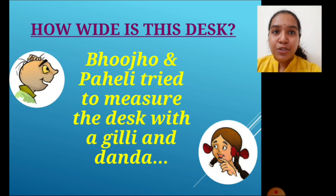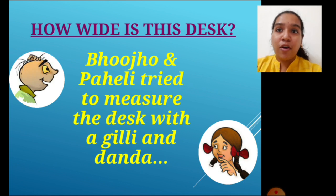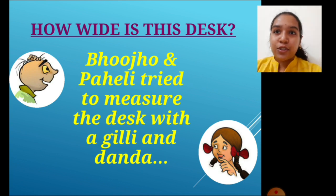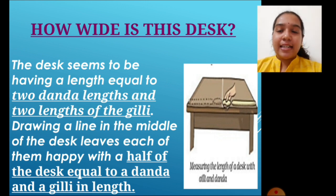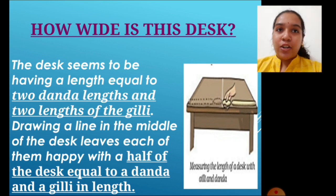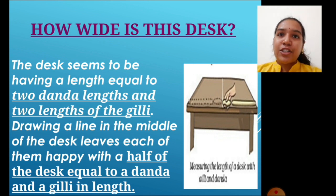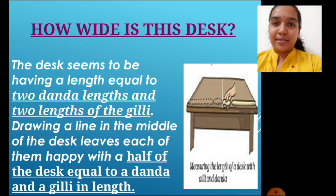Bhujo and Paheli tried to measure the desk with the help of Ghilli and Danda. Ghilli Danda is a game played in olden days - the Danda is like a wicket and the Ghilli resembles the bales in cricket. They used this Ghilli and Danda to measure the desk. After measuring, they found the desk length to be equal to two Danda and two Ghilli lengths, and drew a line to share the desk equally, with each half being one Ghilli and one Danda.